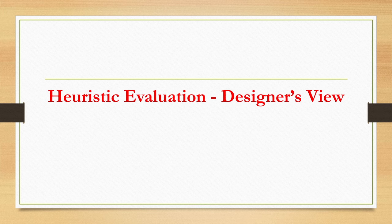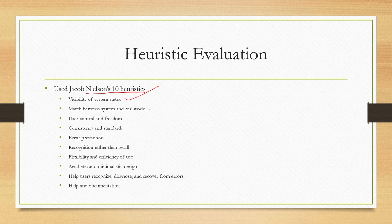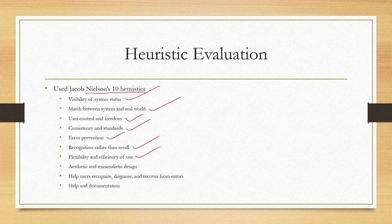In order to perform heuristic evaluation we will follow the 10 heuristics by Nielsen. These 10 heuristics are: visibility of system status, match between the system and the real world, user control and freedom, consistency and standards, error prevention, recognition rather than recall, flexibility and efficiency of use, aesthetic and minimalist design, help users recognize, diagnose and recover from errors, and help and documentation.